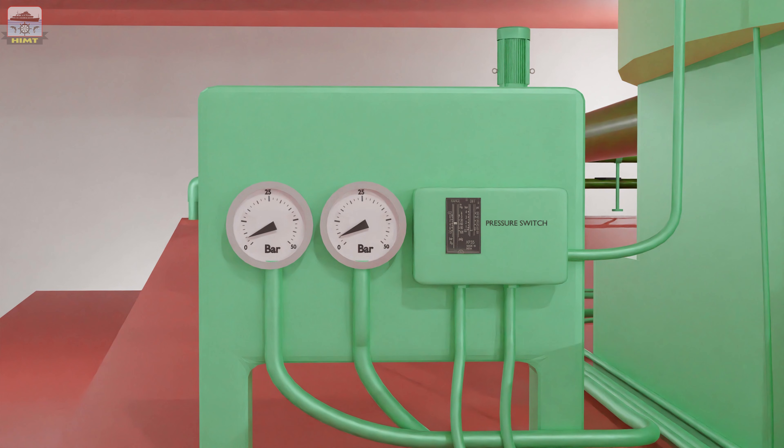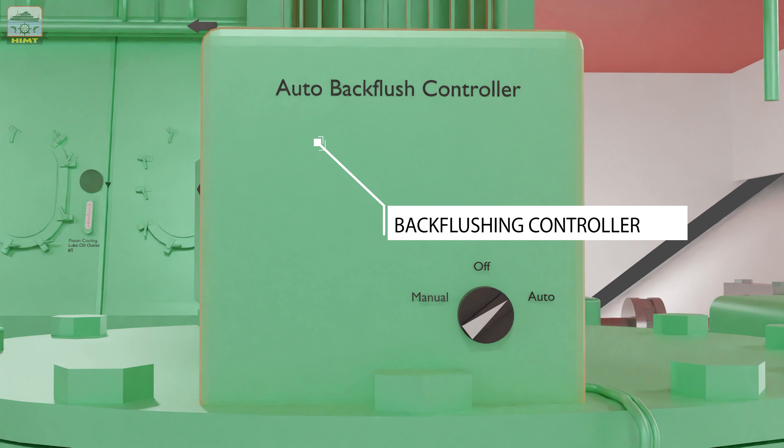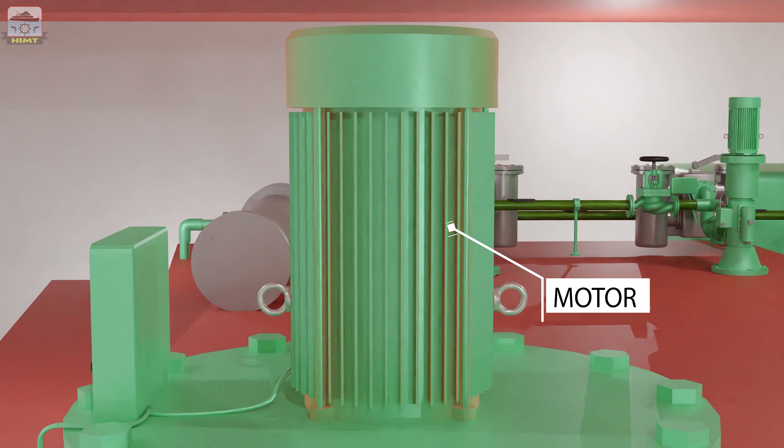Due to this process, the differential pressure across the filter reduces and the flow rate of lube oil to the engine increases. The back flushing controller starts the cycle and brings the filter elements one by one for back flushing with the help of a motor fitted on top.